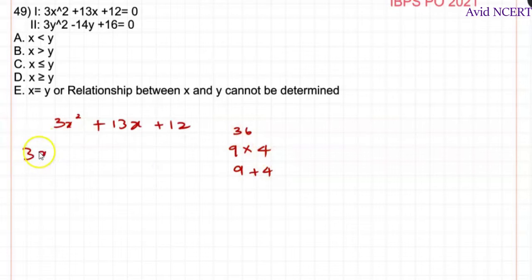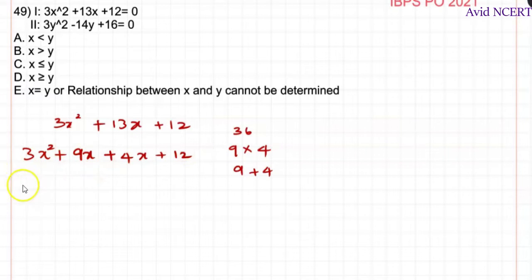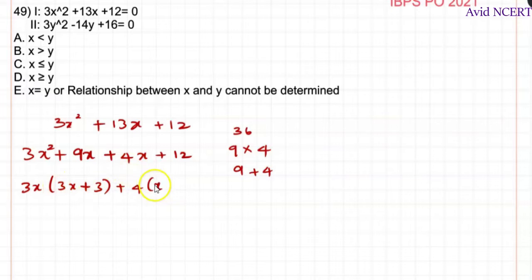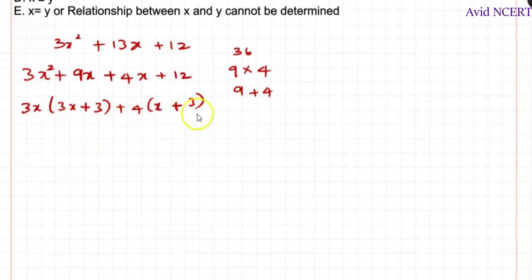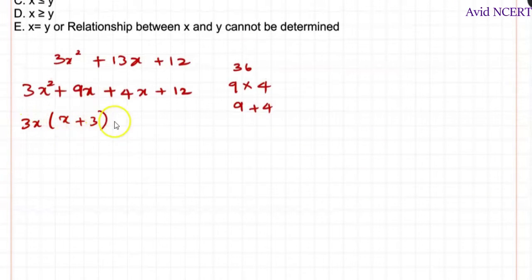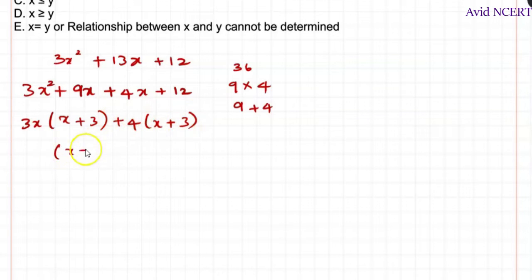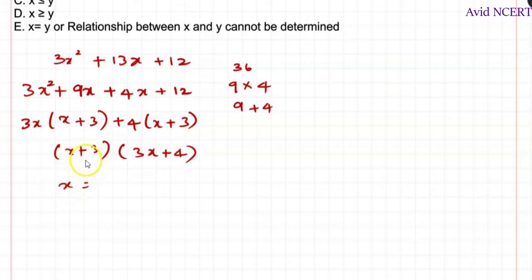Substituting these, we get 3x² + 9x + 4x + 12. Taking common from the first two terms: 3x(x + 3) + 4(x + 3). Taking (x + 3) as common gives (x + 3)(3x + 4). So x = −3 and x = −4/3.